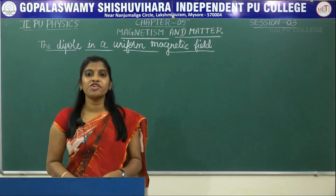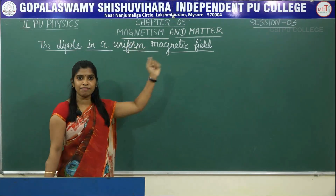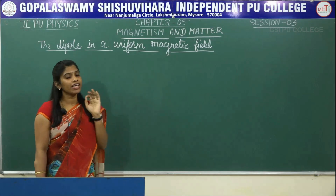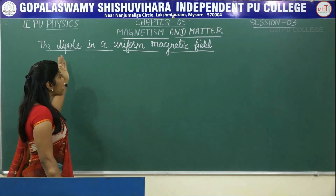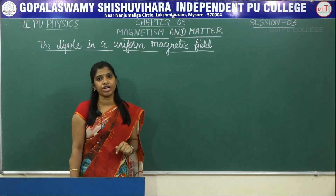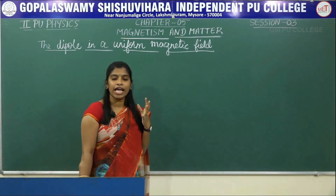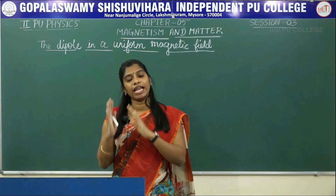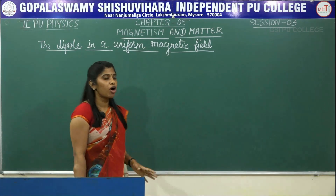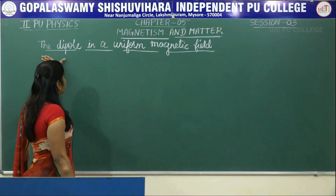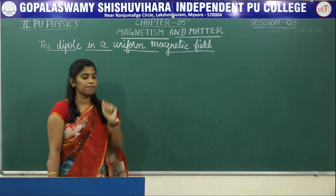Hello everyone. We are in session 3 of the chapter Magnetism and Matter. In this session I am going to discuss about the dipole in a uniform magnetic field. We have already studied about the electric dipole in a uniform electric field. Similarly, we are going to study about the magnetic dipole placed in a uniform magnetic field.